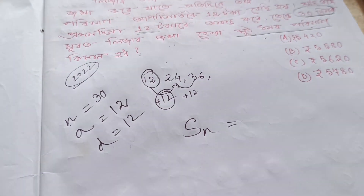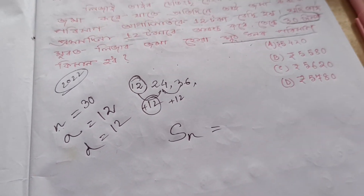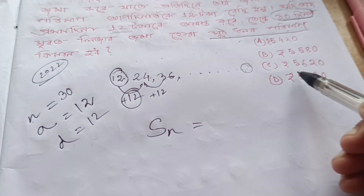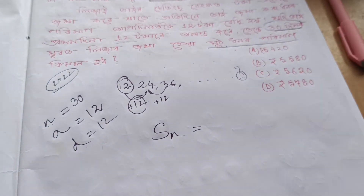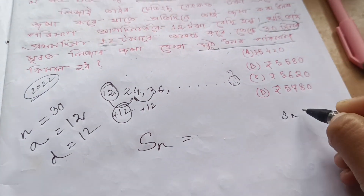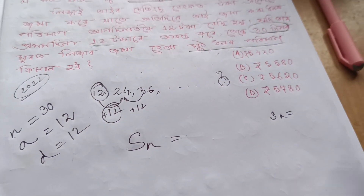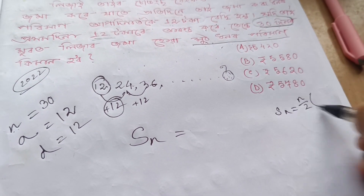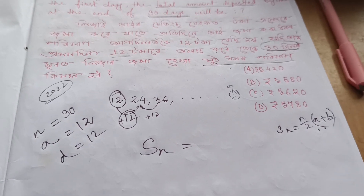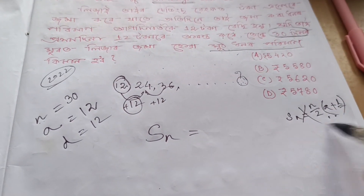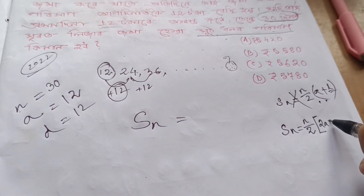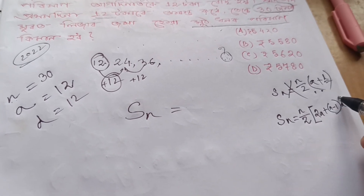The formula is S(n) is equal to n by 2 within bracket a plus l, where l means the last term. But since the last term is not known, we use S(n) is equal to n by 2 within bracket twice a plus n minus 1 into d.